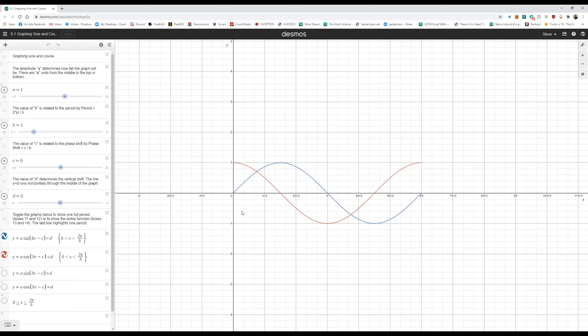So those a and b values, that a value is the one that's out in front of sine or cosine, and b is that value that's attached directly to x just on the inside of sine or cosine.